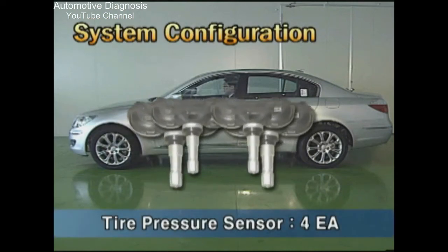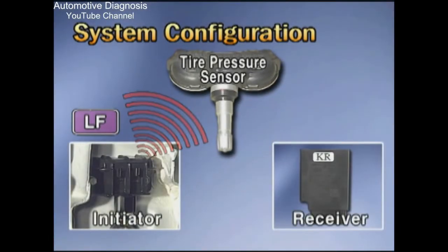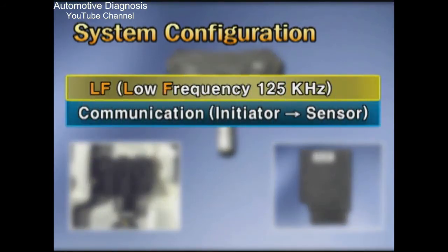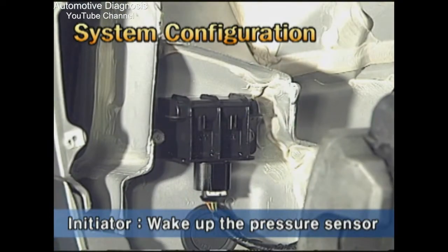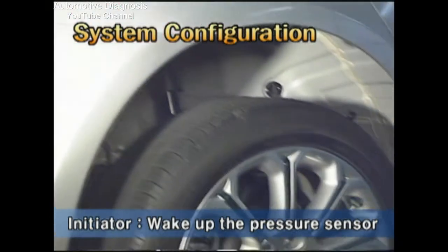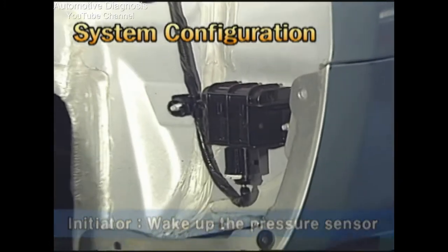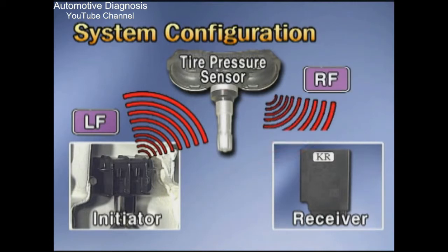For system configuration, a pressure sensor for measuring air pressure of each tire is installed at each tire and receives the LF signal. LF, as the abbreviation of low frequency, has a frequency of 125 kHz and communicates with the initiator using low frequency. The initiator wakes up the sensor and is installed at the back of the right front tire and at the front of the right rear tire. The receiver sends the signal for waking up the pressure sensor to the initiator and receives the RF signal from the pressure sensor.